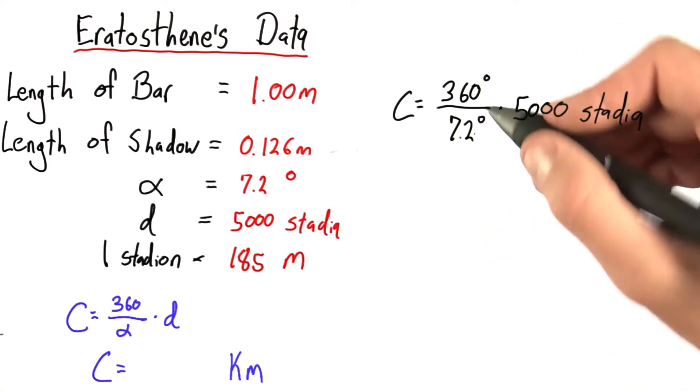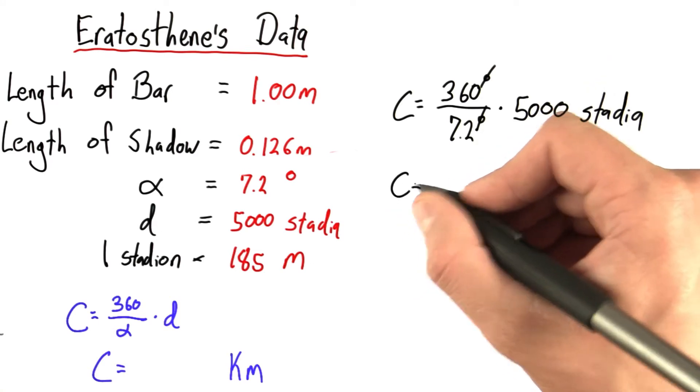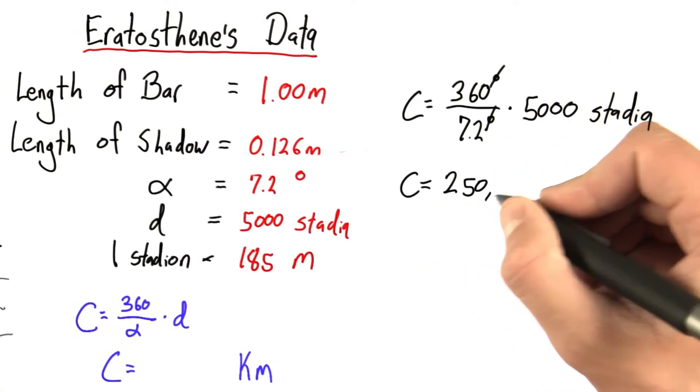When we do this out, the degrees cancel. We get a value for the circumference of 250,000 stadia.